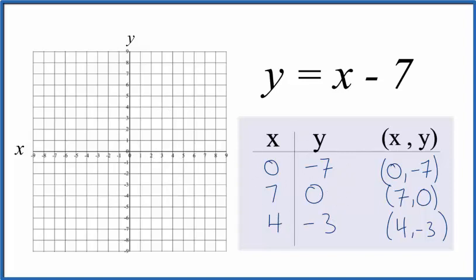So let's graph them. We have zero for x and then negative seven for y. We have seven for x and zero for y. And finally, we have four for x and negative three. There's negative three on the y.